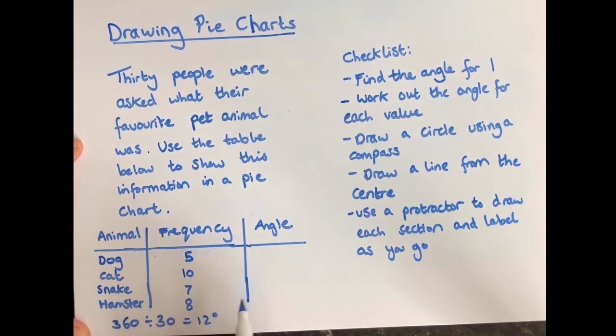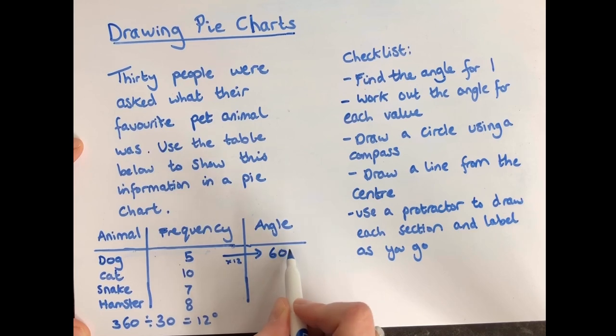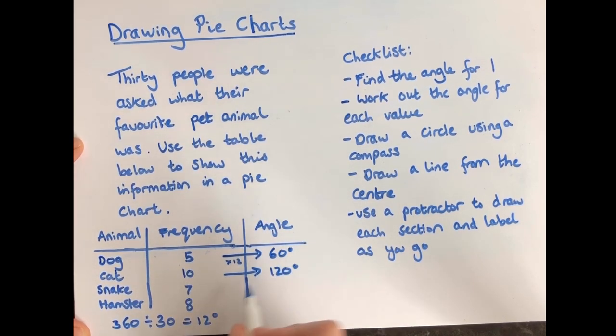So then I multiply these values by 12. So 5 multiplied by 12 equals 60 degrees. 10 multiplied by 12 is 120 degrees. 7 multiplied by 12 is 84 degrees and 8 multiplied by 12 is 96 degrees.